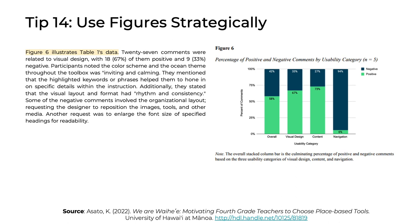Tip 14: Use figures strategically. We all know the expression 'a picture is worth a thousand words.' In a master's paper, a figure related to your usability results can also be worth a thousand words. Think carefully about whether a figure can help convey important information to readers. When done well, a figure in the form of a chart can provide tons of information efficiently and effectively. In this example, we can see a very easy-to-read vertical bar chart with stacked columns, and highlighted in yellow, we can see how the author refers to that figure in the narrative: 'Figure 6 illustrates Table 1's data.'